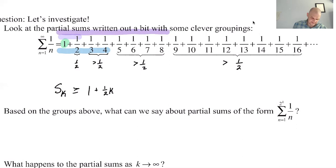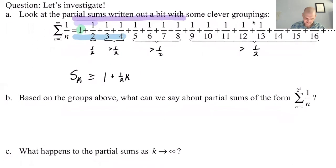So K is equal to zero gives us one. K is equal to one, we get the sum from one to two, which is three halves, which works. When K is equal to two, we get the sum from one to four, which is definitely bigger than one plus two times one half and so on. So I think that this is working.